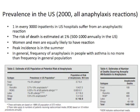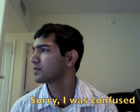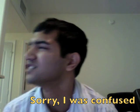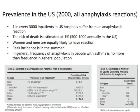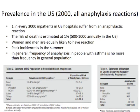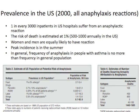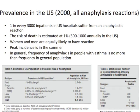In general, the frequency of anaphylaxis in people with asthma is no more than the frequency in the general population. Asthma doesn't really make people more likely to have anaphylactic reactions than people without asthma.